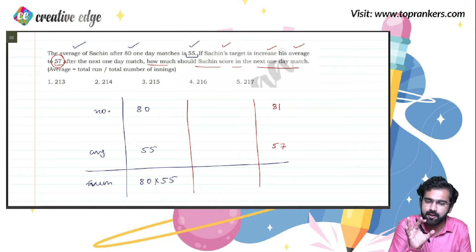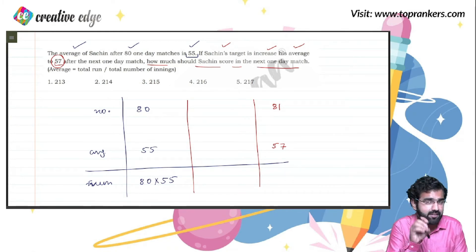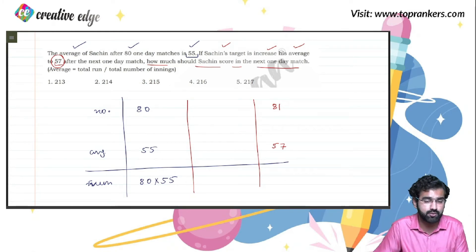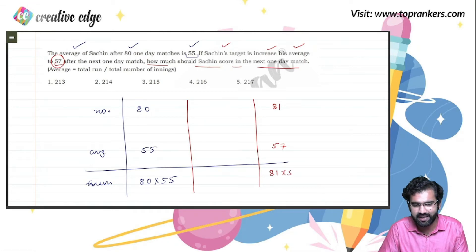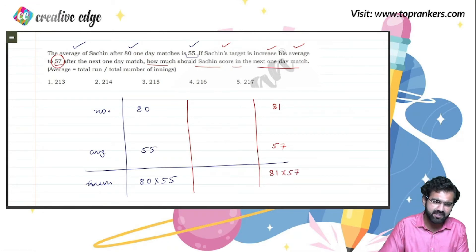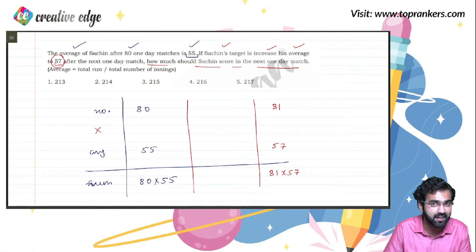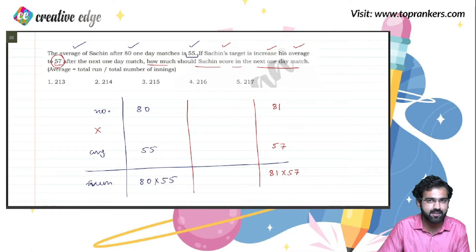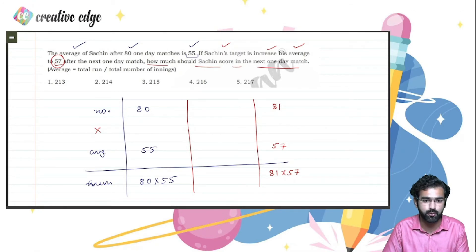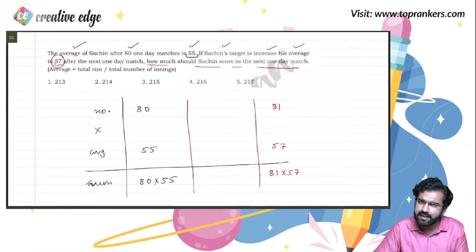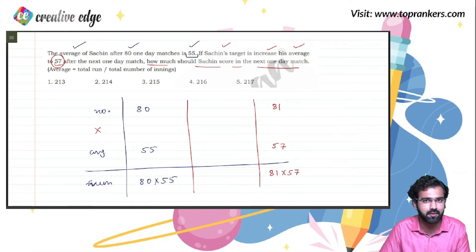Using the conventional approach: the total runs scored in 81 matches with an average of 57 would be 81 times 57. In 80 matches with an average of 55, the total would be 80 times 55. So the runs scored in the 81st match would be (81 × 57) minus (80 × 55). However, there is a more intuitive approach.